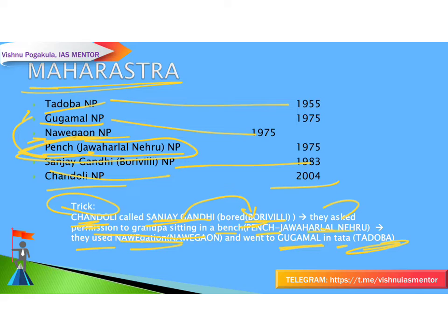To recap the Maharashtra story trick: Chandoli, Sanjay Gandhi Borivali, Pench Jawaharlal Nehru, Navegaon, Gugamal, and Tadoba.